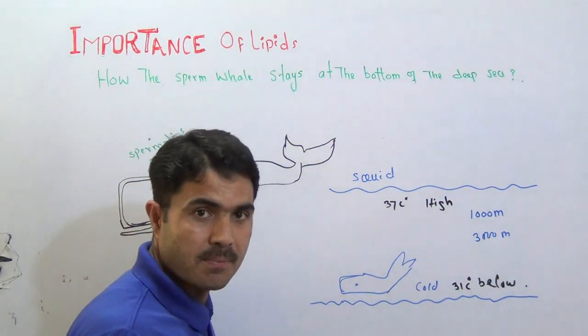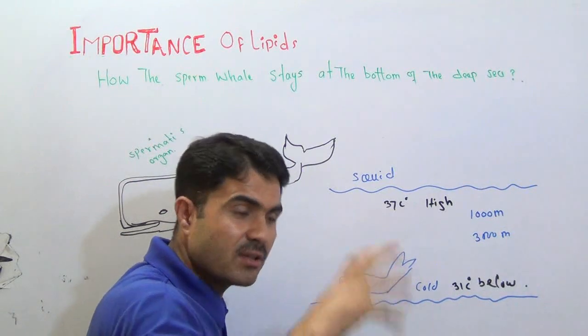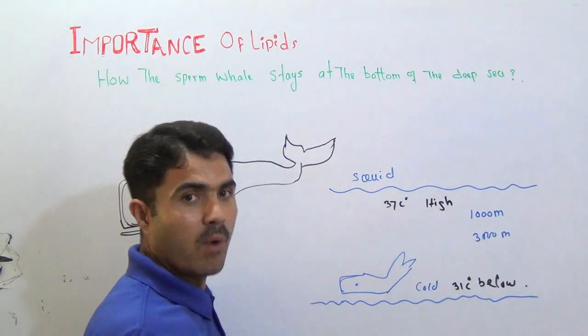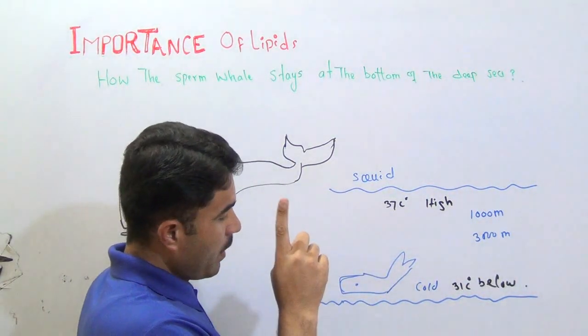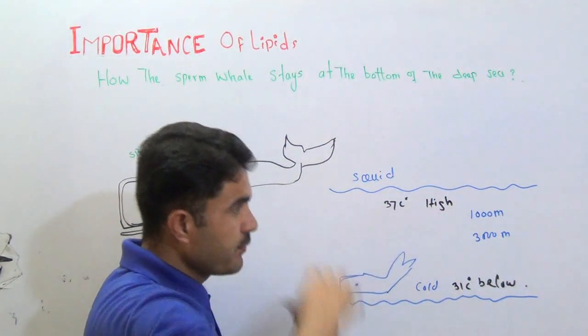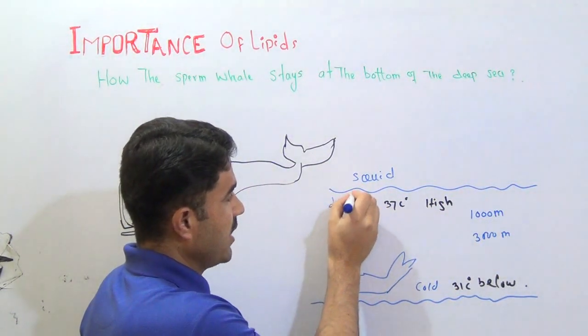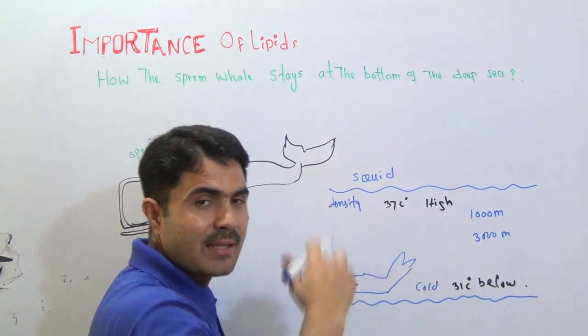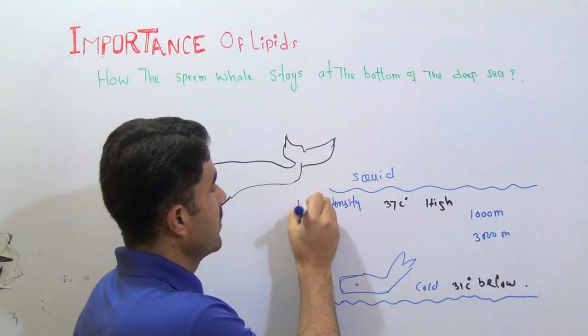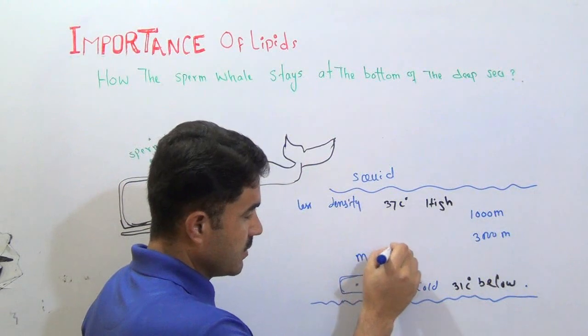Fine. The problem is that, how that fish stay at the bottom, because there are some issues. Issue number one, that if the fish, there is difference of the density, the water at the top level is less dense and the water at the bottom level is more dense, denser.